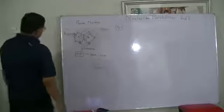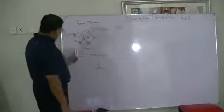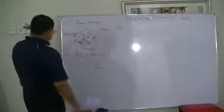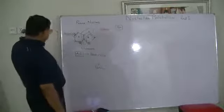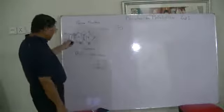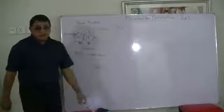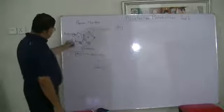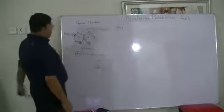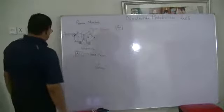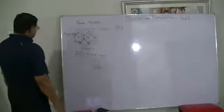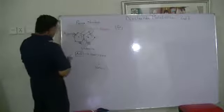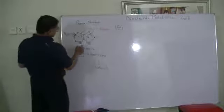These two nitrogenous groups — at N3 and N9 positions — are formed by glutamine, which is the second amino acid. And the third amino acid provides the nitrogen at position N1. This is aspartate.